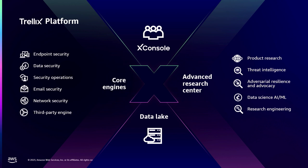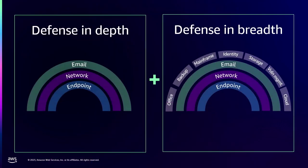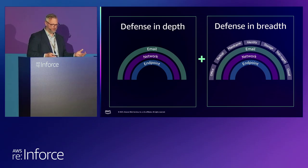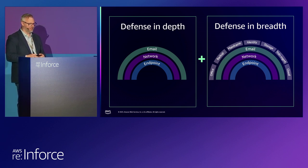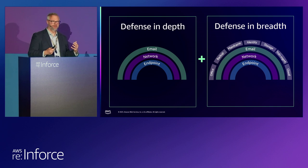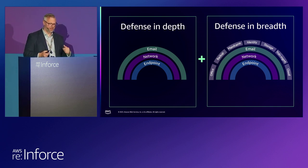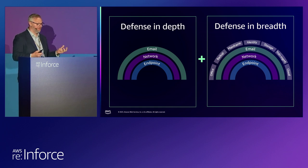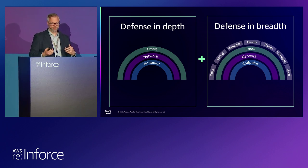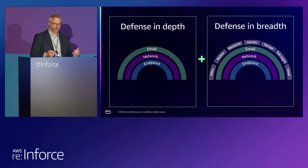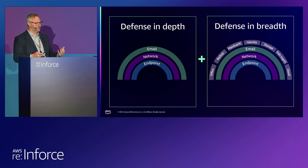We do a lot of different things — endpoint, email — but what I'm going to show you today is what happens when you put all that together in the same place. For a long time we've been talking about defense in depth: email, network, endpoint. You still need all that stuff, you wouldn't want to remove any of those things. But what we're finding is that business goes far beyond those things. We have to include a lot of others like Office, backup, mainframe, identity, storage, vulnerability management, and of course cloud. I call this defense in breadth — we have to look much wider in addition to the depth.